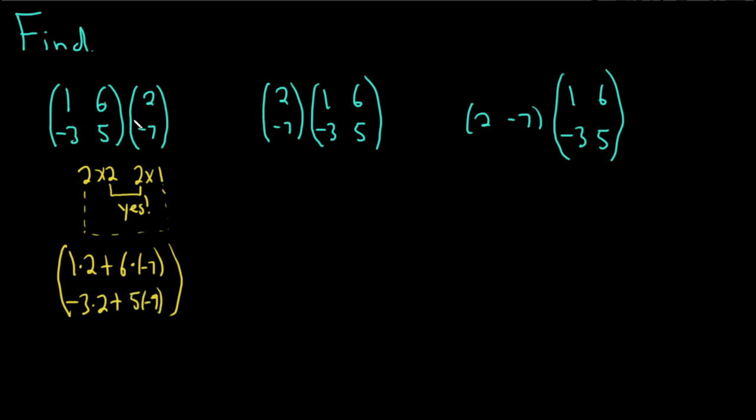Negative 3 times 2 plus 5 times negative 7. Again, this is the second row, first column. We're in the second row, first column. That's where we are, that's what we use. And so this will be 2 minus 42, which will be minus 40. And negative 6 minus 45, do that right? That's a 7 minus 35. Negative 6 minus 35, which will be negative 41. Yeah, it looks okay. I think that's good.